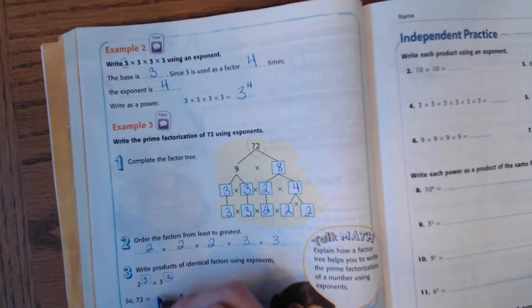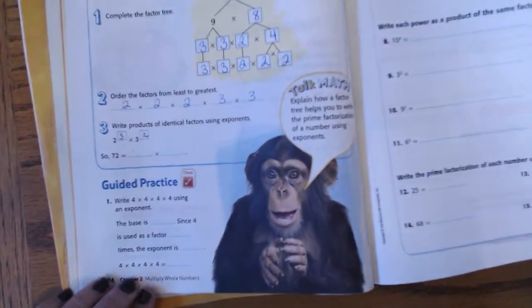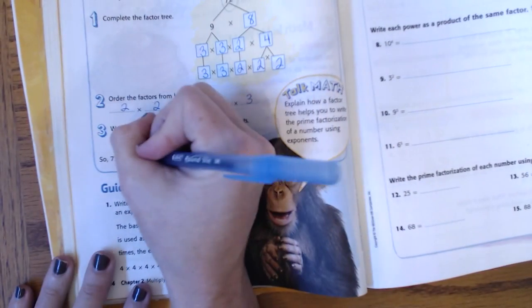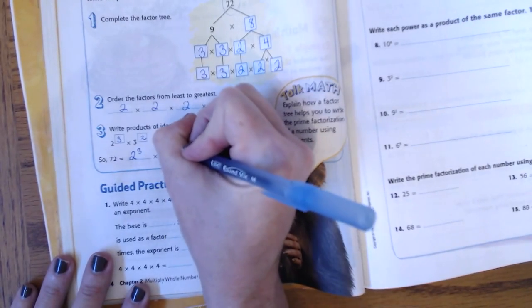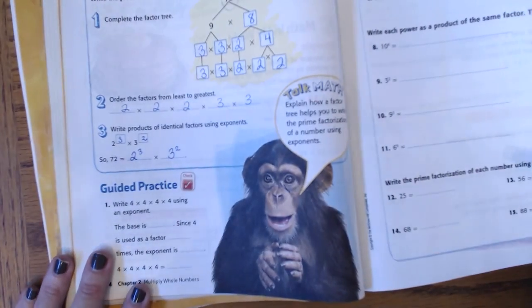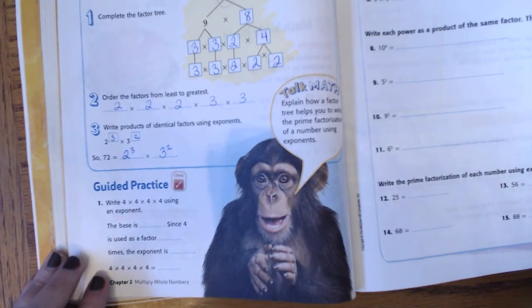So, 72 can be broken down into two to the third power times three to the second power. Okay, I hope this helps you guys. Thank you.